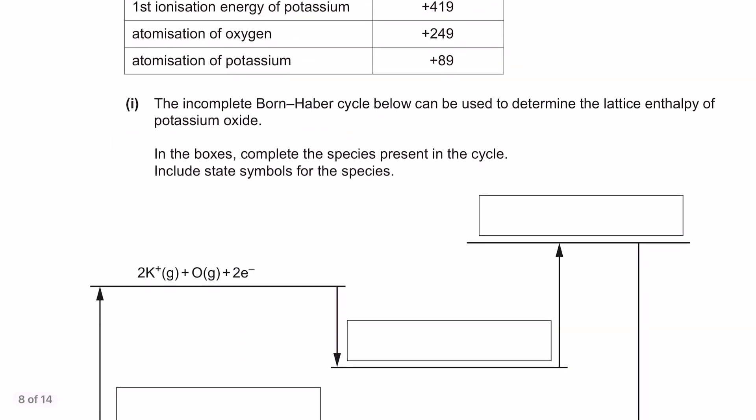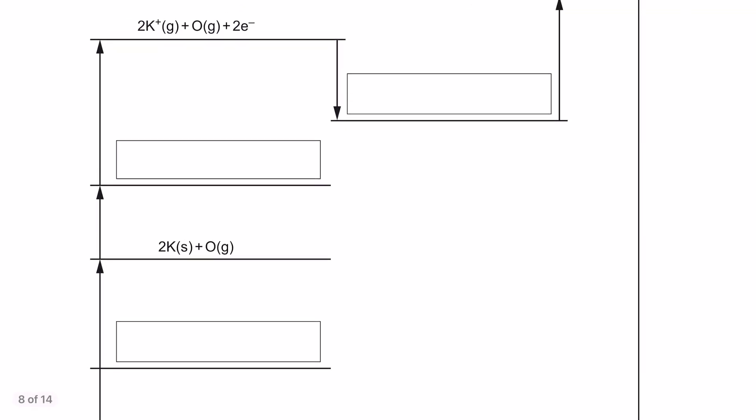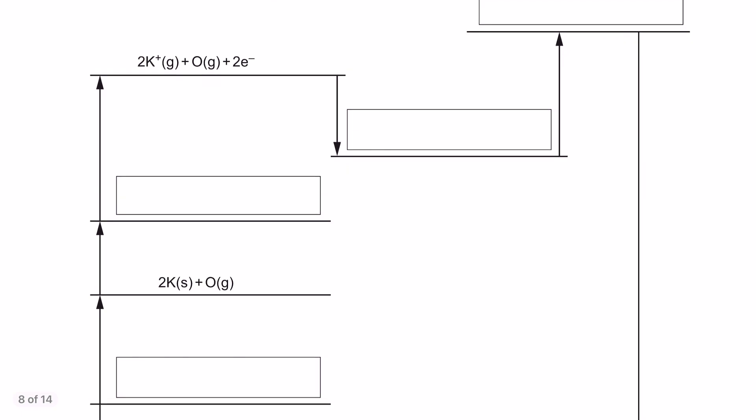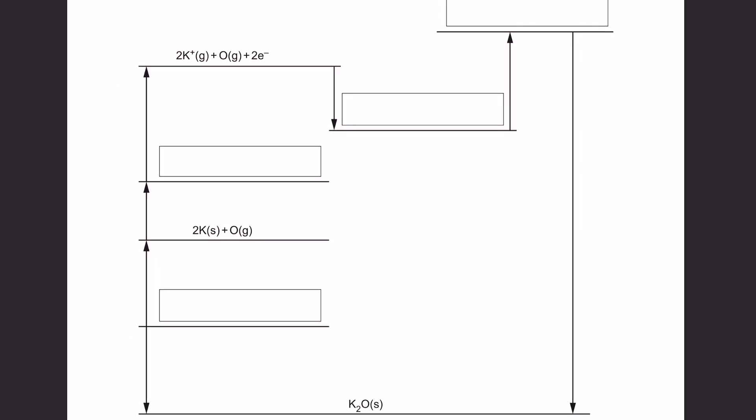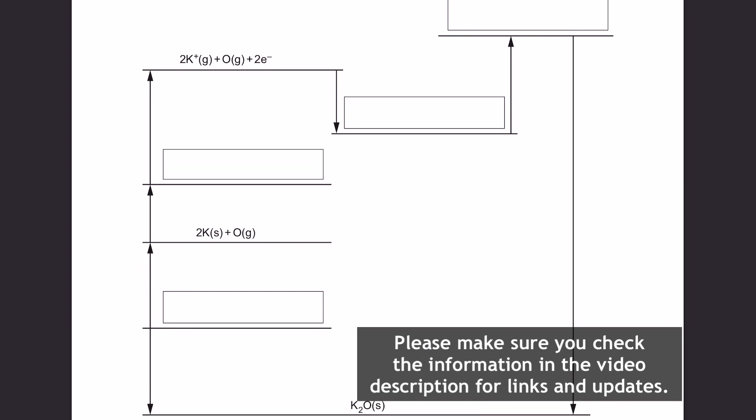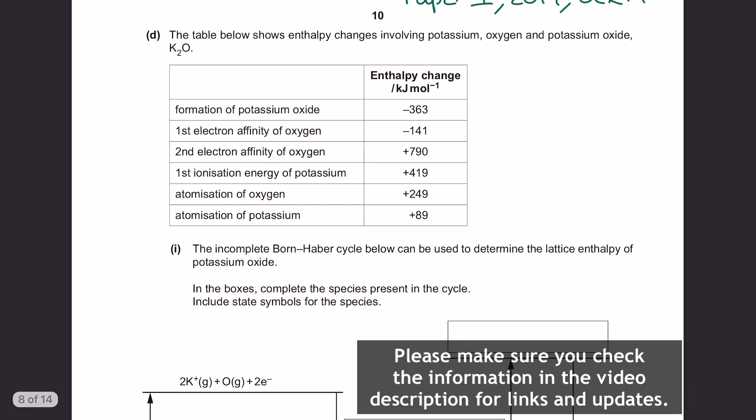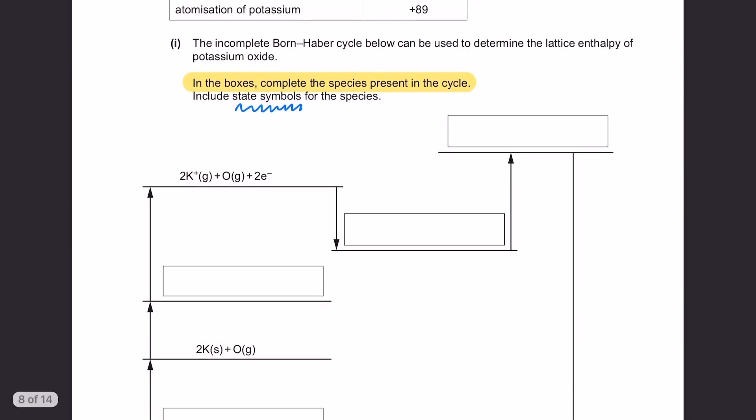Let's use this exam question from Paper 1, 2019 on the OCR A specification for A-level chemistry to examine the details of everything we need to know. This cycle we have in the question is for potassium oxide, which is brilliant because it's an example of a formula which has a multiple of an ion and we need to consider that in the calculation later.